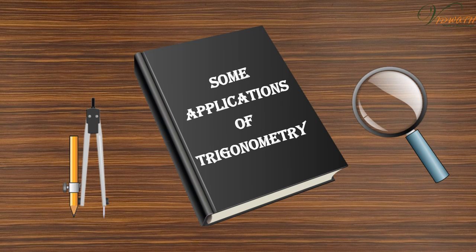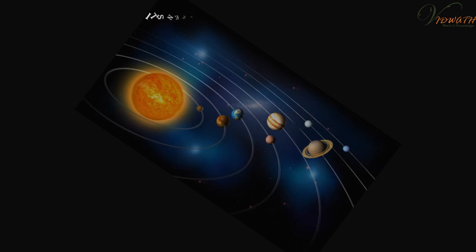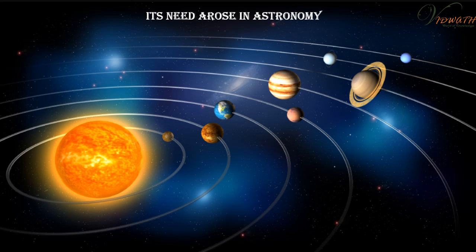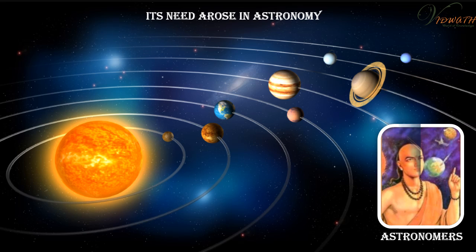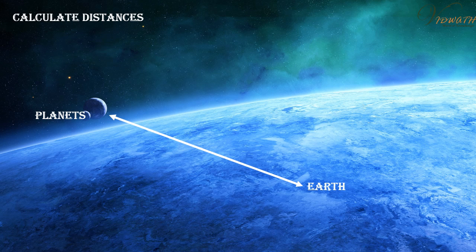Some applications of trigonometry. Trigonometry was invented because its need arose in astronomy. Since then, astronomers have used it, for instance, to calculate distances from the Earth to the planets and stars. Trigonometry is also used in geography and in navigation.